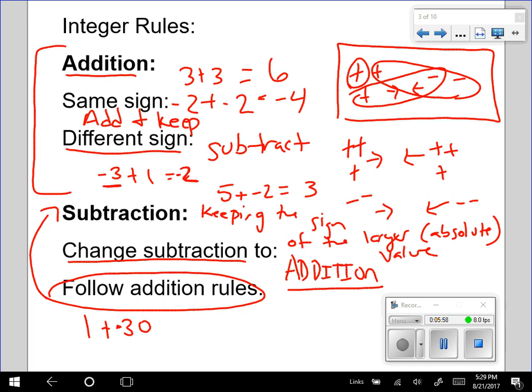Change subtraction to addition, change the sign of the next number. We never change the first number. It's always the number following the subtraction sign that we've changed. Now we can follow the addition rule. So I'm adding. I can come back up here. I have different signs, so I'm going to subtract. 30 minus 1 is 29.